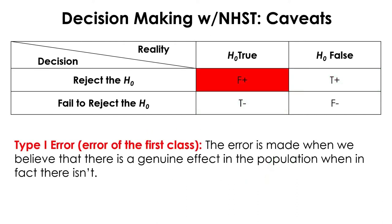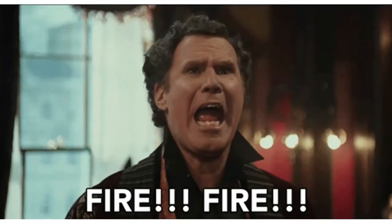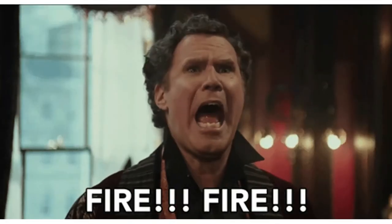However, if we reject the null when the null is true in reality, then we just made an error called Type 1 error. This is when you claim that there is something when in fact there is nothing — basically a false alarm: the alarm goes off even though there is no fire.